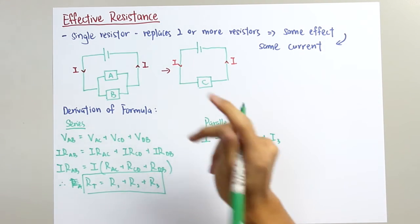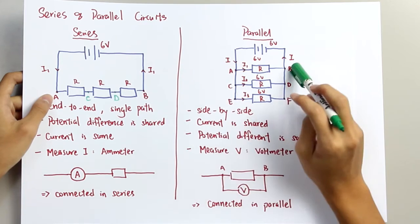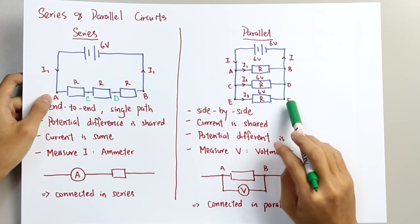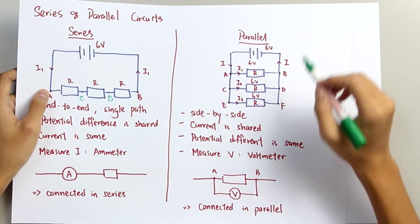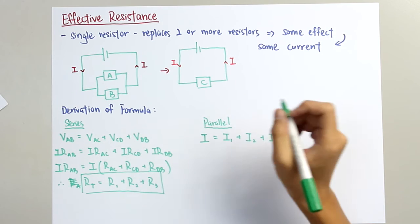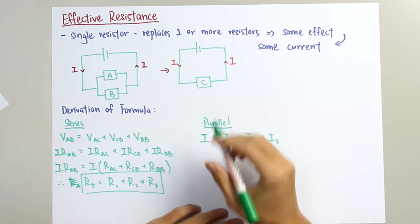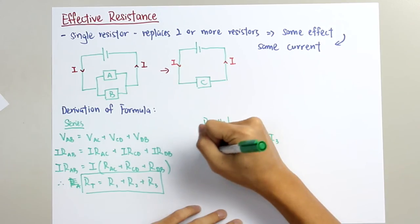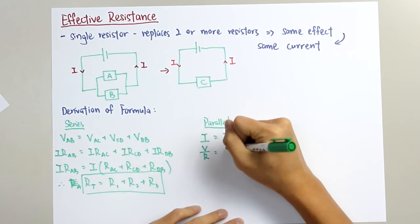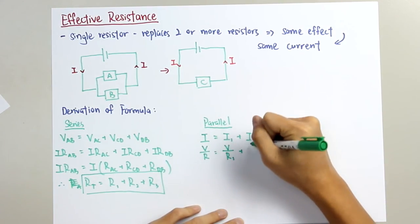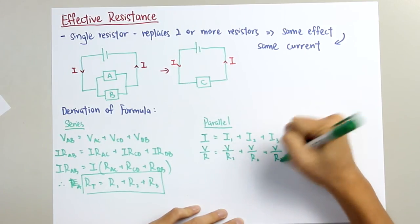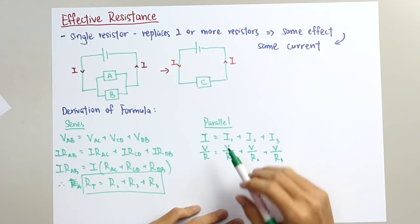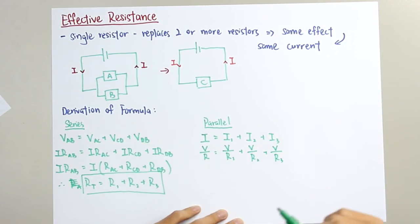And since we know that the potential difference across AB, CD, and EF are the same, therefore we can say that the potential difference across the host circuit will always be constant. Therefore, we derive the formula: I equals to V over R equals to V over R1 plus V over R2 plus V over R3.